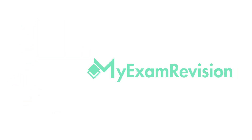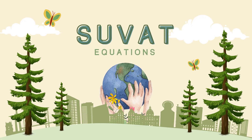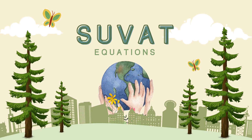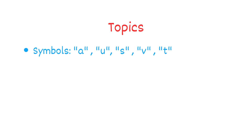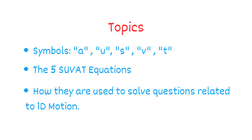Welcome back to my exam revision. In today's video, we're diving into the fascinating world of SUVAT equations for GCSE and A-level kinematics. We will discuss the following topics: all the different symbols used in these equations, their meanings and their SI units; the 5 SUVAT equations; and how they are used to solve questions related to 1D motion. So let's get started.